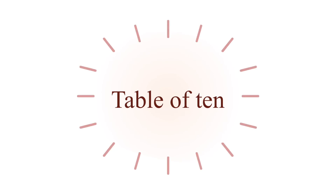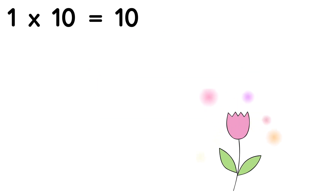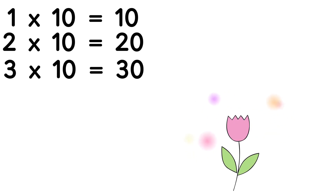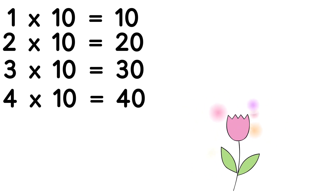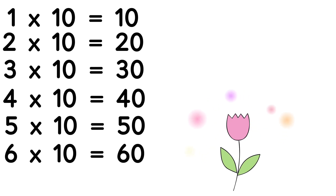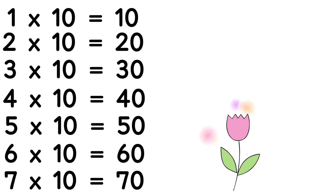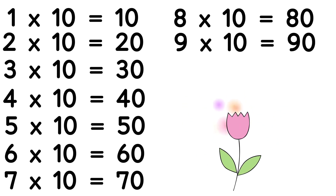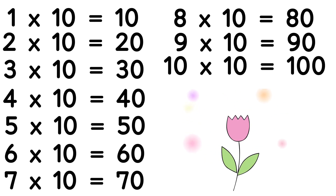Table of 10: 1 ten is 10, 2 tens are 20, 3 tens are 30, 4 tens are 40, 5 tens are 50, 6 tens are 60, 7 tens are 70, 8 tens are 80, 9 tens are 90, 10 tens are 100.